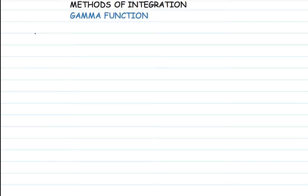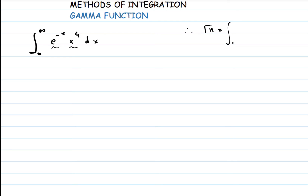For example, we're given the integration from 0 to infinity of e raised to minus x, times x raised to 4, dx. We're supposed to find the value of this. Before we try to use substitution by parts and separate functions to find u and v, du and dv, we know that the general form of the gamma function is: gamma of n equals the integral from 0 to infinity of e raised to minus x, x raised to n minus 1, dx.